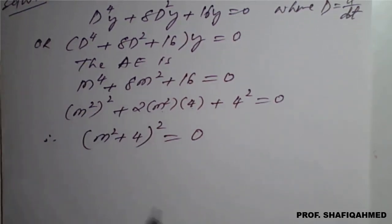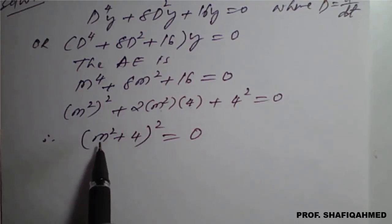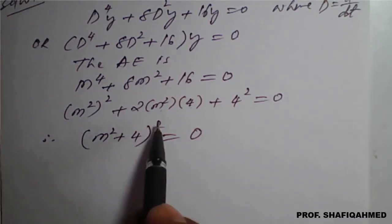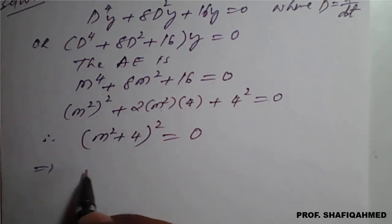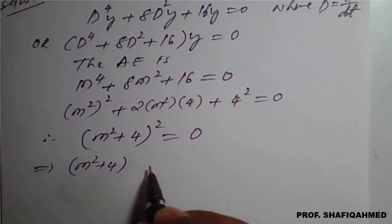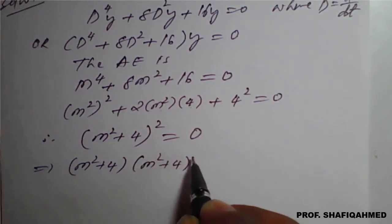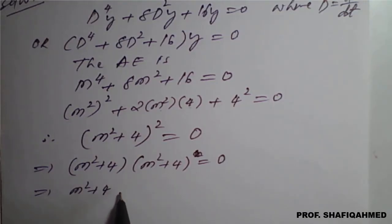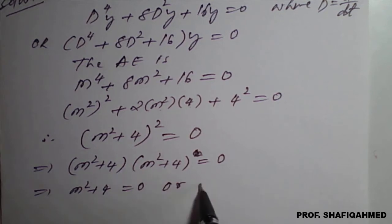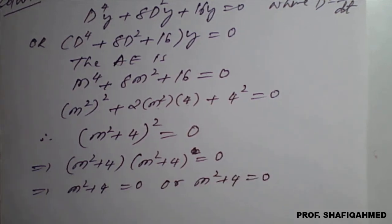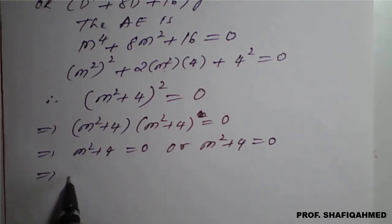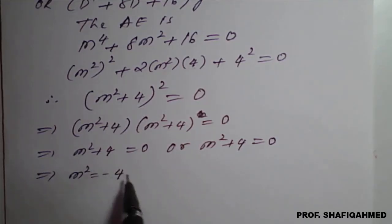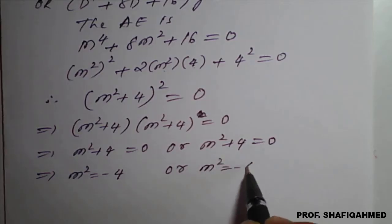Now with the help of this we can find the roots. (m² + 4)² means (m² + 4)(m² + 4) equal to 0, which implies m² + 4 = 0 or m² + 4 = 0. On simplifying, m² = −4 or m² = −4. Taking square root on both sides, m = ±√(−4).